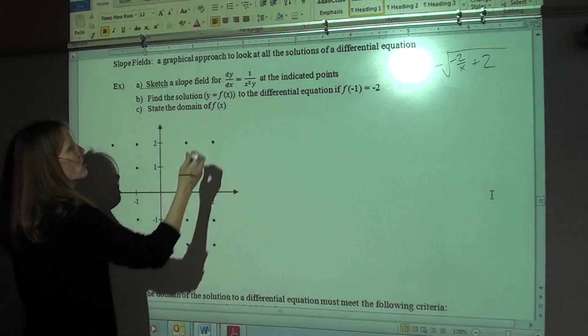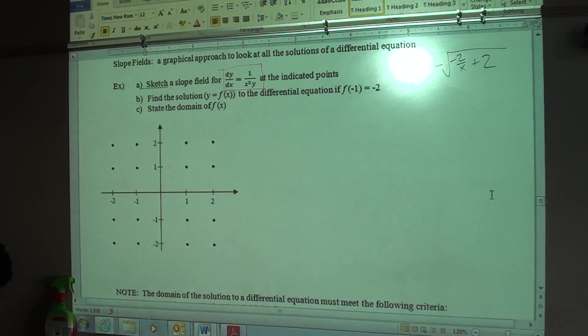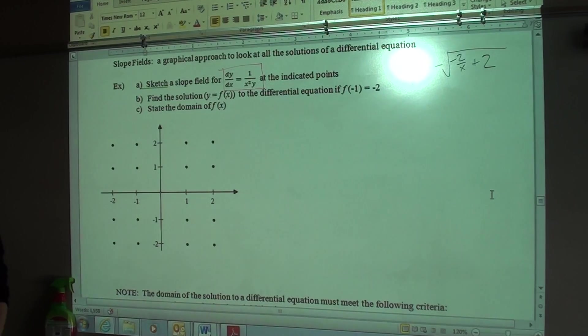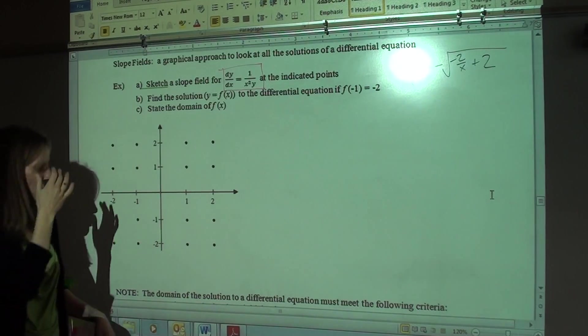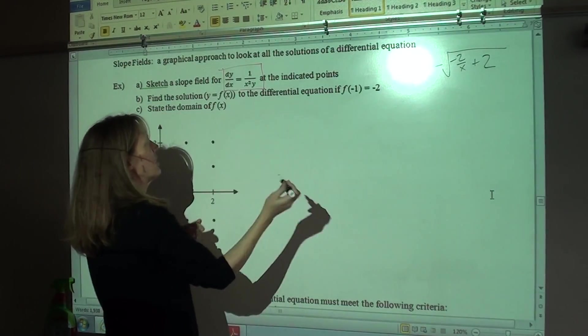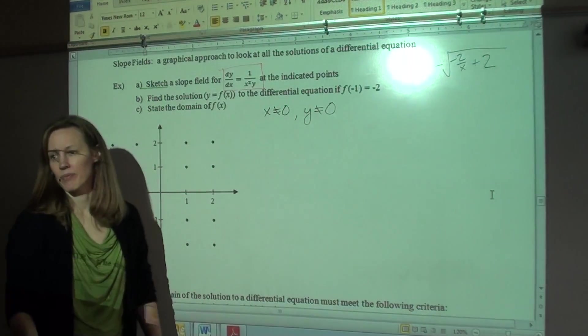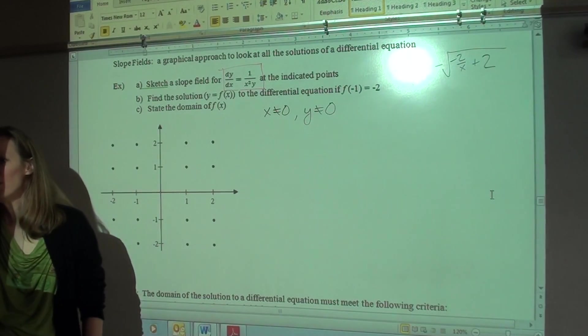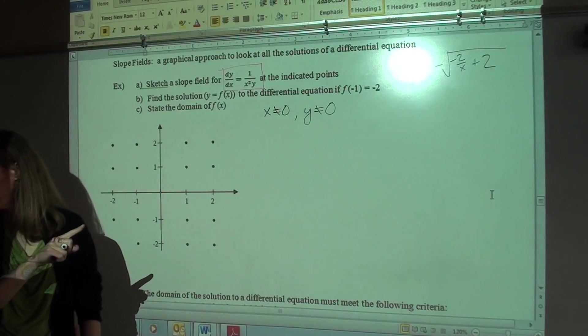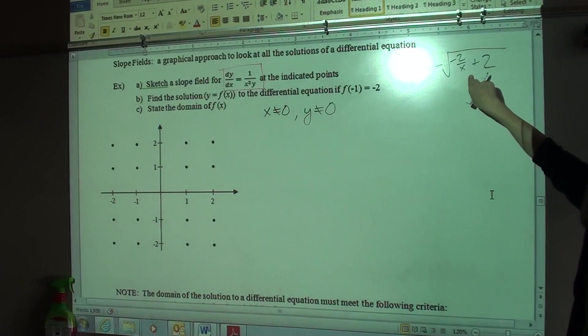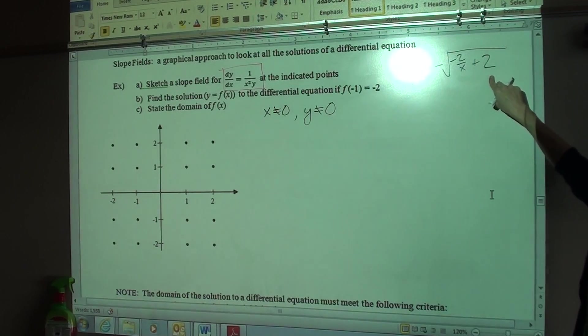So if we look at the original differential equation, what do we know has to be true or what can't happen? It can't be zero. What can't be zero? The denominator cannot be zero. The denominator. So specifically, X cannot be zero and Y cannot be zero, right? So to meet the demands of the original differential equation, we know that X cannot equal zero and Y cannot equal zero. Now we have to satisfy the domain of the solution. So let's look at the solution. We have negative 2 over X plus 2 inside of our square root symbol, which means this stuff in here has to be what? Zero. It has to be greater than or equal to zero, right? Okay.